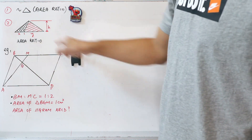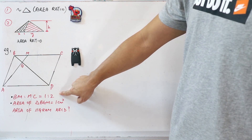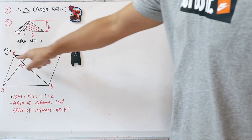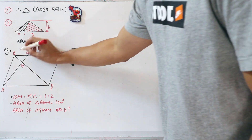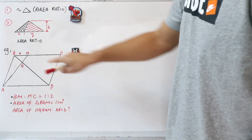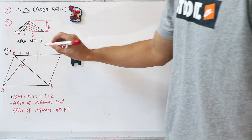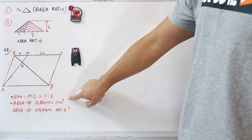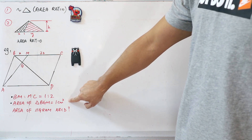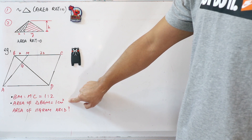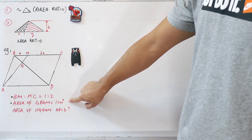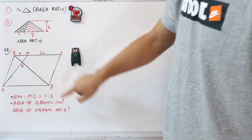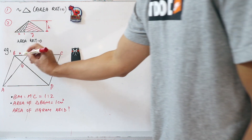This question tells you two things about this figure. First of all, it tells you the ratio of BM to MC is 1 to 2. So if I let the length of BM be x, the length of MC will be 2 times that, so it'll be 2x. The second thing is the area of triangle BGM is 1 cm squared, so I'll just put a 1 here.